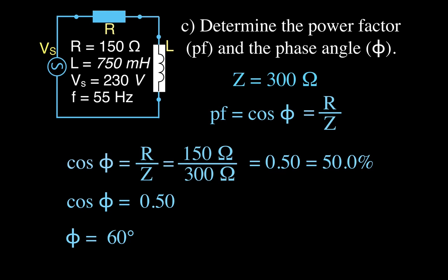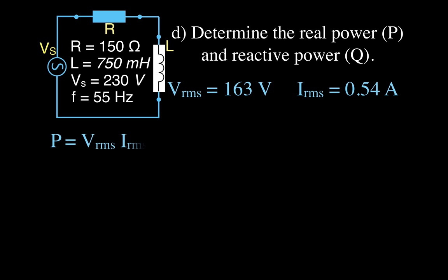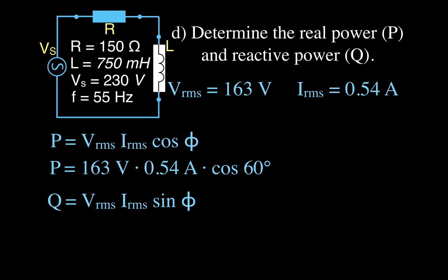Now we calculate the real and reactive power. The equation for real power P is V_rms times I_rms times cosine of the phase angle. Plugging in values: 163 volts times 0.54 amperes times cosine of 60 degrees, which gives us 44 watts. That is the real power consumed by that circuit.